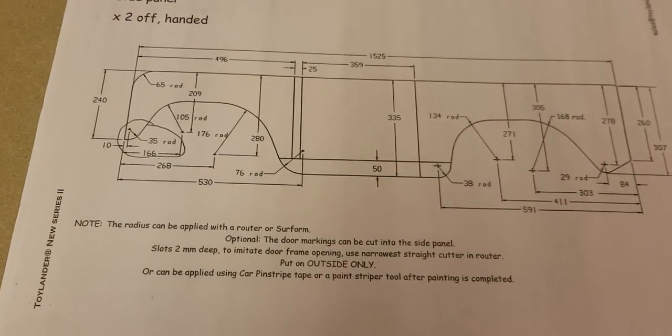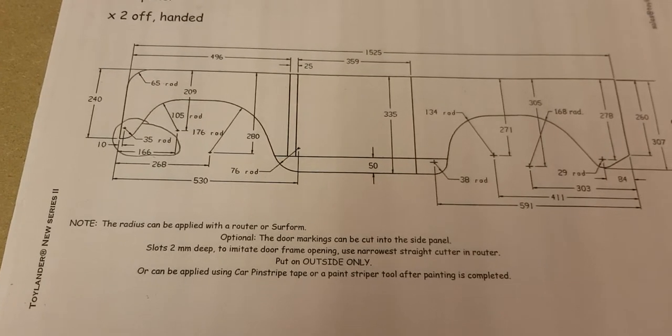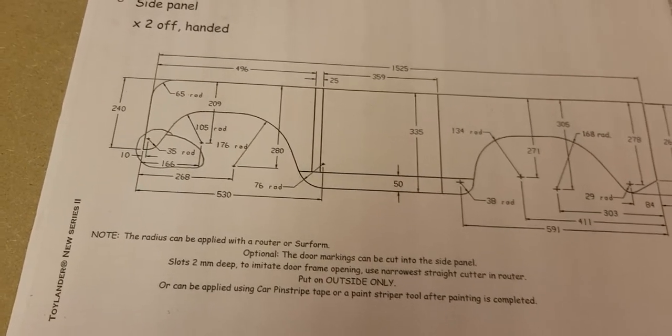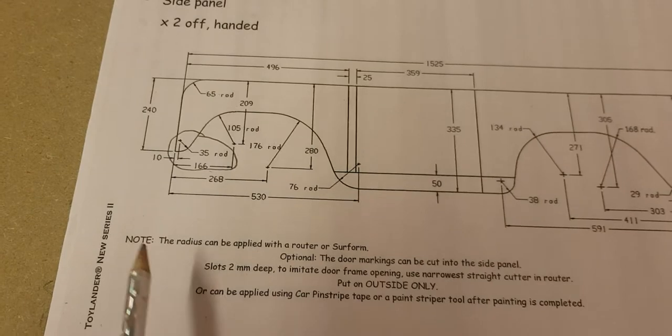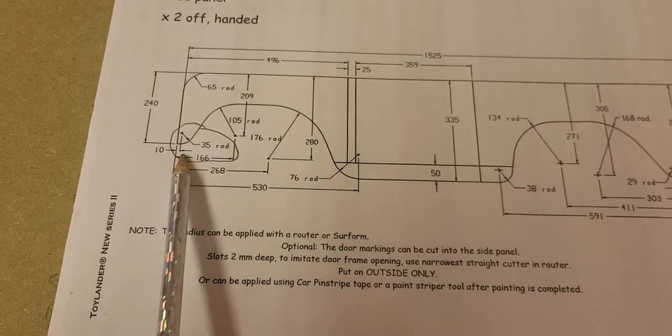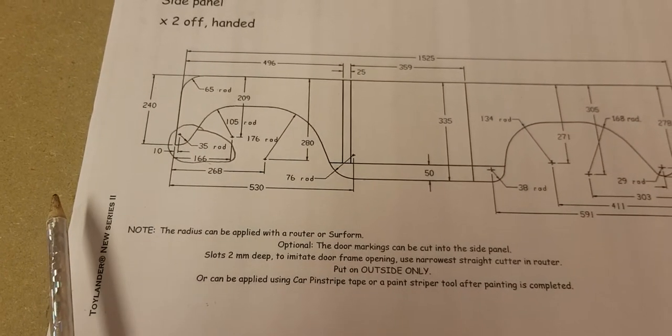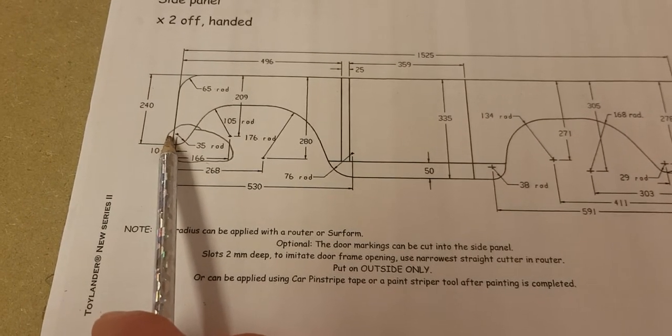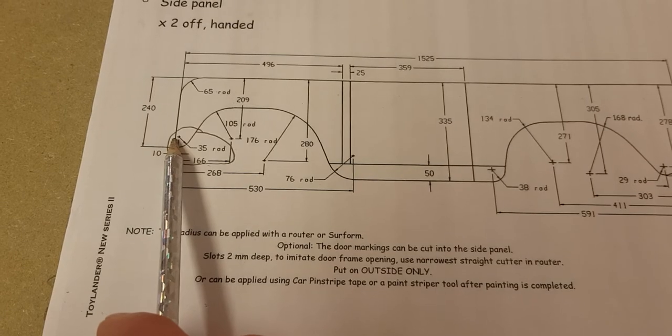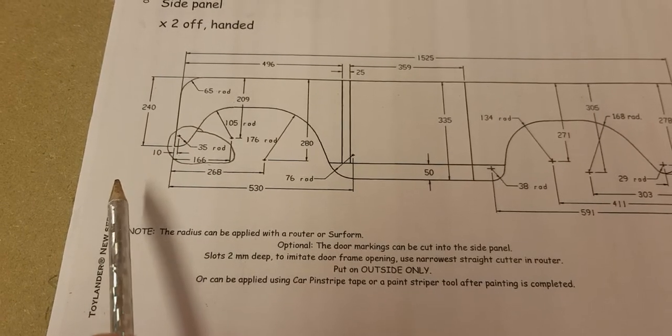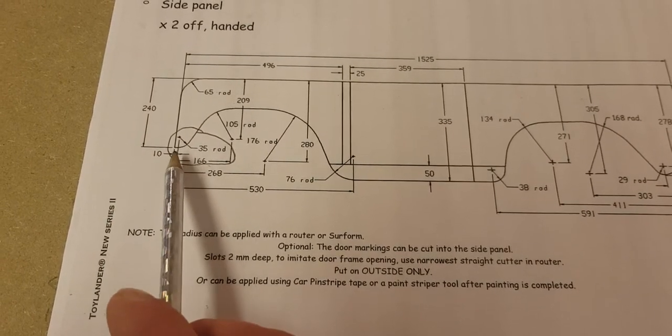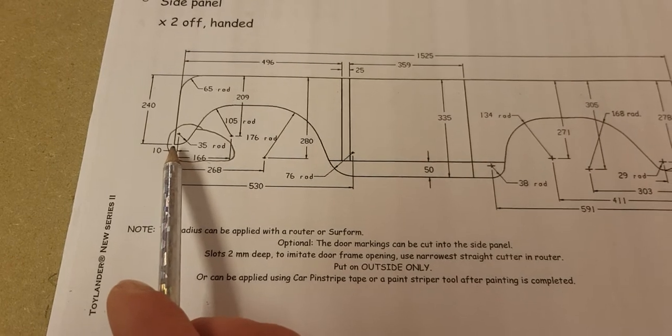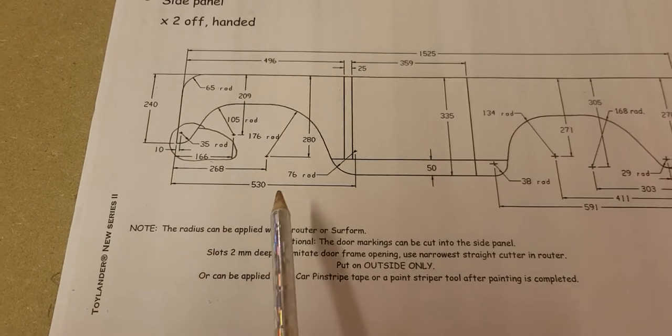So, talking about the markings and measurements for your radiuses. The first one is right at the front, you'll see there. Now, you need to measure in 10mm from the front of the panel and 35mm from the bottom.